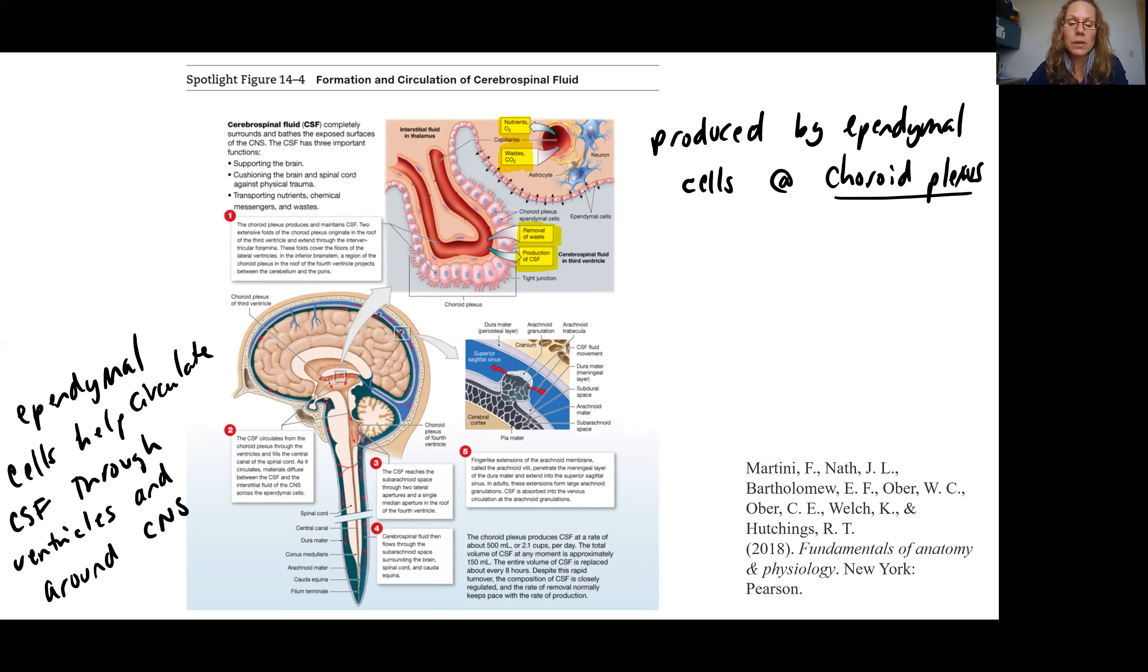The ependymal cells are helping to circulate that fluid through the central canal and around the outside of the central nervous system.